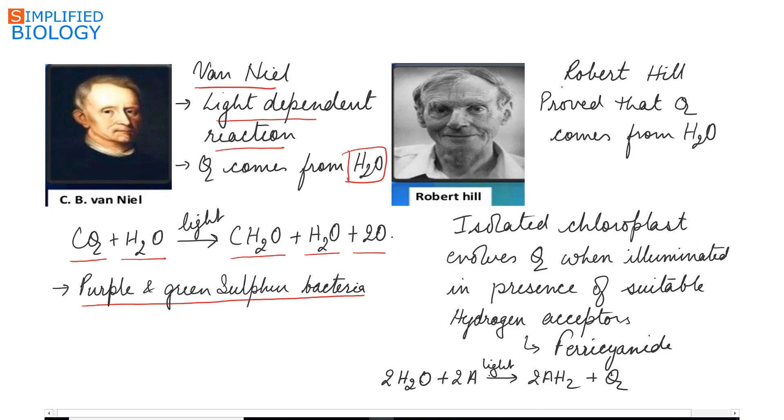Next was Robert Hill who proved that oxygen released during photosynthesis comes from water. He showed that an isolated chloroplast evolves oxygen when illuminated in the presence of a suitable hydrogen acceptor and in the absence of carbon dioxide. In the presence of a hydrogen acceptor like ferricyanide, he showed that the chloroplast releases oxygen. These hydrogen acceptors are referred as Hill's oxidants and Hill's oxidant in photosynthesis is NADP. Hill showed that water in the presence of a hydrogen acceptor released oxygen.